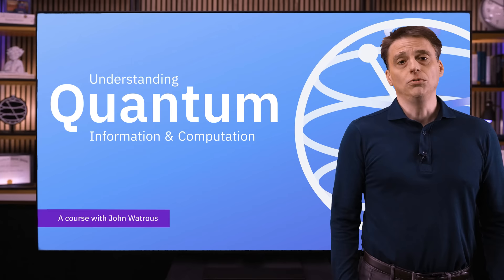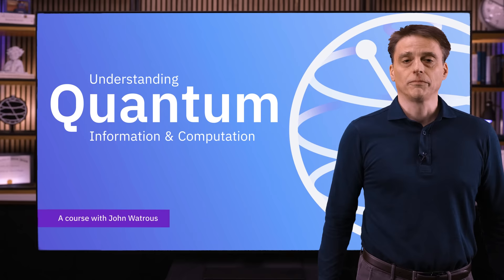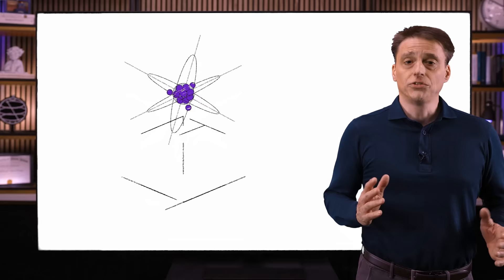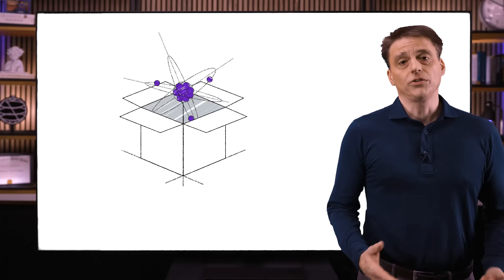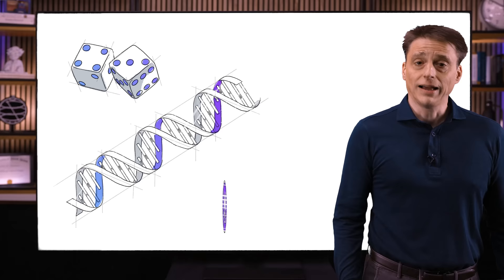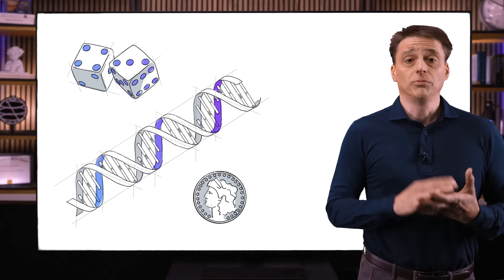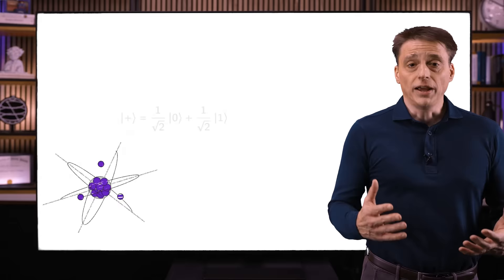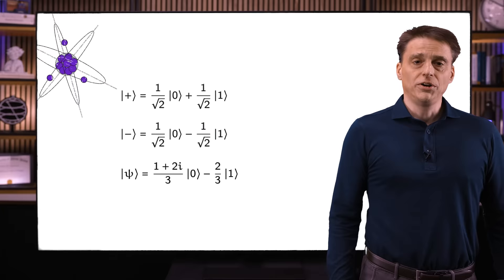This is lesson two of unit one of the series. Unit one covers the basics of quantum information. In the previous lesson, we talked about quantum information in the setting of single systems — meaning we have one system that stores information, and we're describing how it works in isolation. We spent a fair amount of time on classical information, mainly to establish a point of reference and to highlight the mathematical similarities between quantum and classical information. We also saw how quantum states can be represented by vectors — specifically vectors having complex number entries and Euclidean norm equal to 1 — and we discussed standard basis measurements and unitary operations.